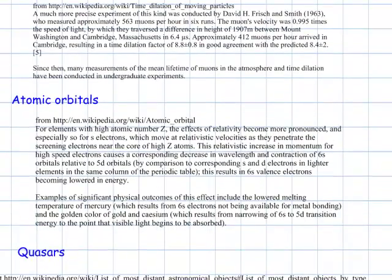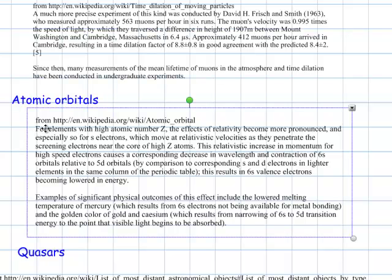Atomic orbitals, and here it says, for elements with high atomic number z, the effects of relativity become more pronounced, and especially so for s electrons which move at relativistic velocities as they penetrate screening and near the core of high z atoms. So if we envision that the electrons are orbiting around the nucleus, then they must do so at high speeds and relativistic effects will be seen.